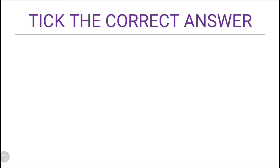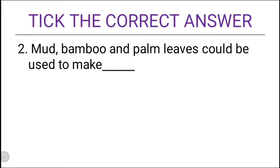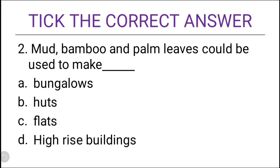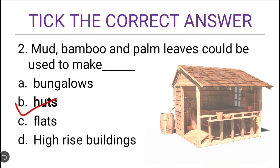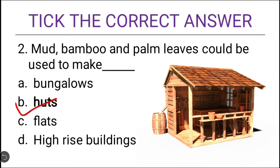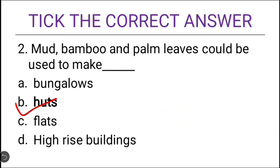Second question: mud, bamboo, and palm leaves could be used to make — options are bungalows, huts, flats, or high-rise buildings. The correct answer is huts. Obviously, if the material available is mud, bamboo, and palm leaves, the only thing I can build is huts.